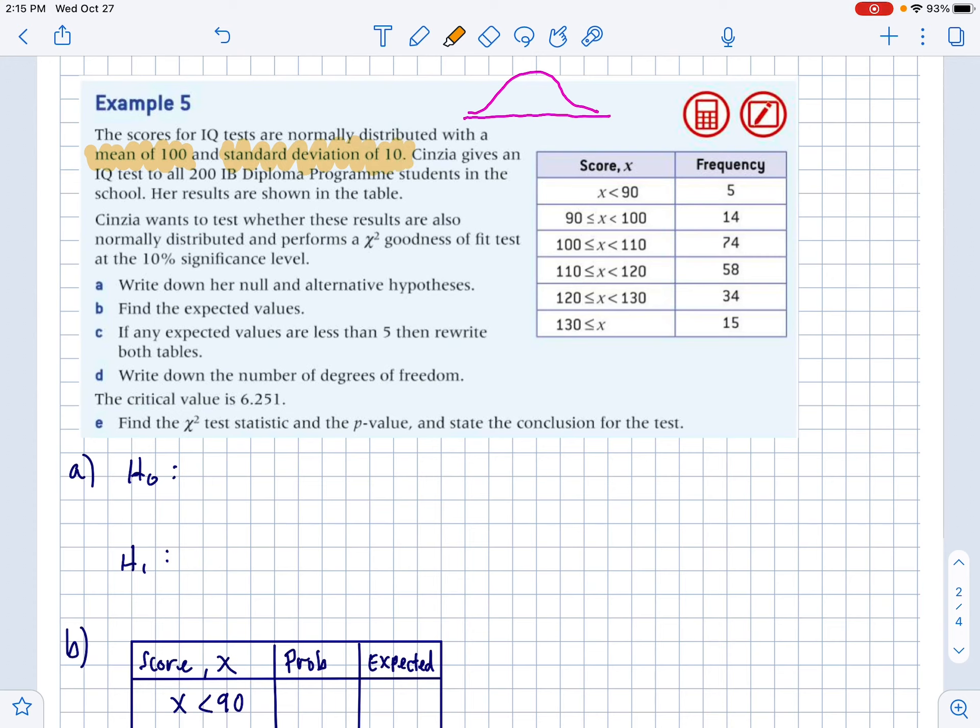So we can use the chi-square-GOF test to see if this data has a normal distribution. These are IQ tests. IQ tests have a mean of 100 and a standard deviation of 10. CINZIA gives an IQ test to 200 IB diploma program students in her school. The results are shown in the table. So we're going to write down the null and alternative hypothesis here. The null hypothesis would be that the scores are normally distributed with a mean of 100 and standard deviation of 10. And the alternative hypothesis would be that the scores are not normally distributed.